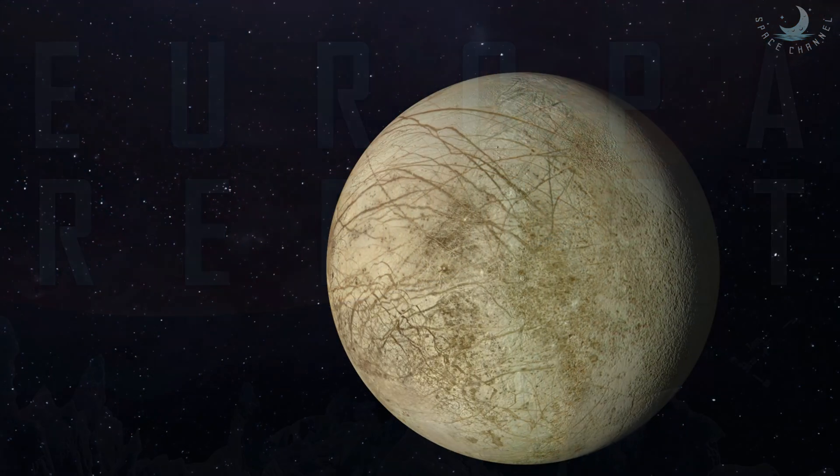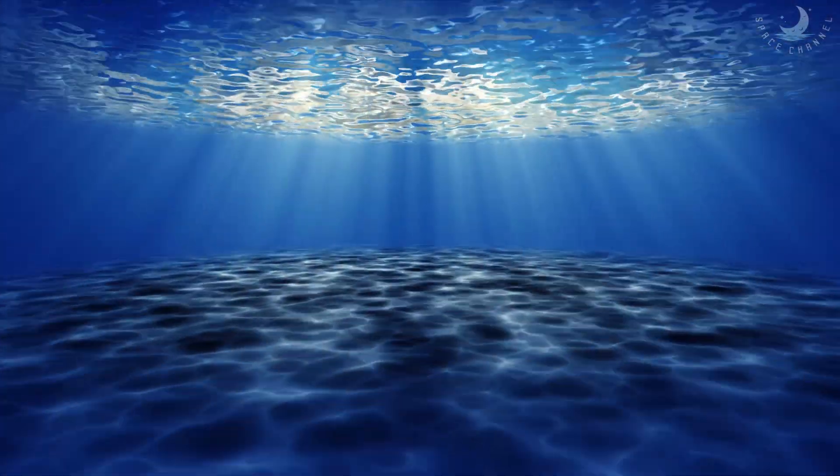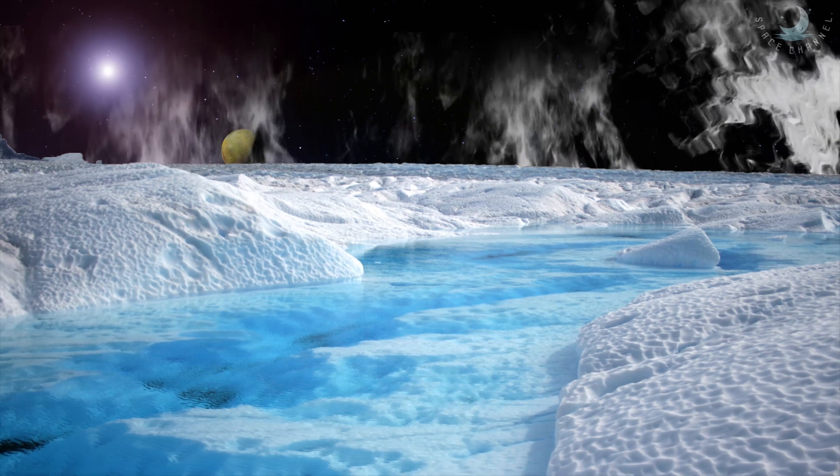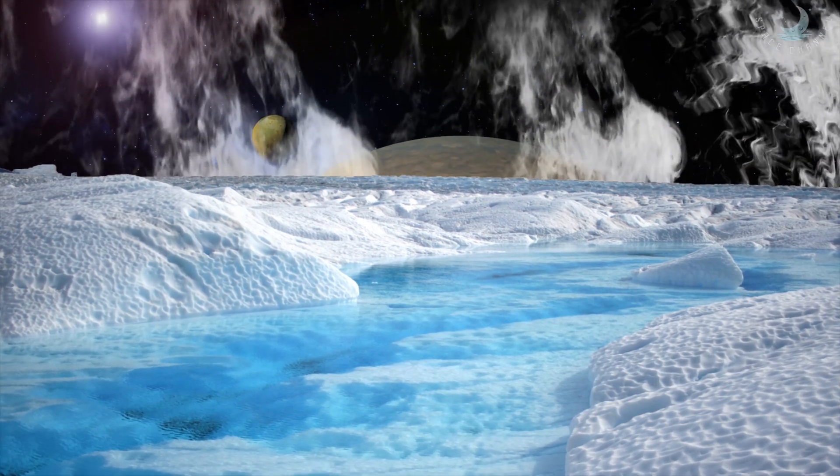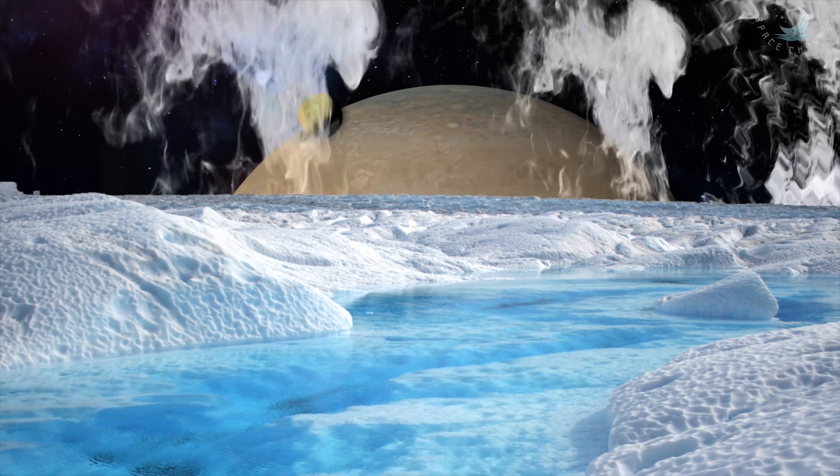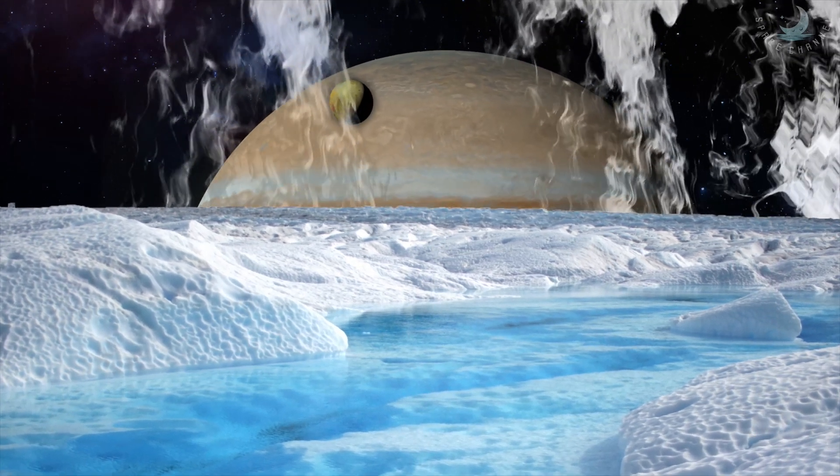Europa has long intrigued scientists because the moon has a subsurface ocean beneath a thick shell of ice. Plumes of water have been known to erupt from cracks in the ice shell, releasing the contents of the moon's alien ocean into space.